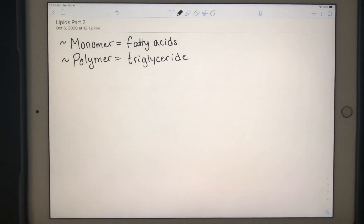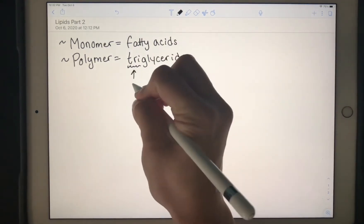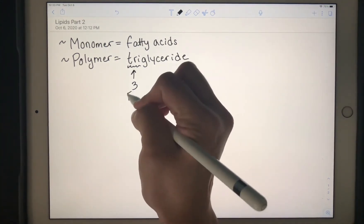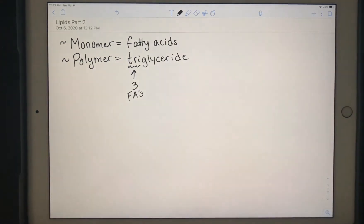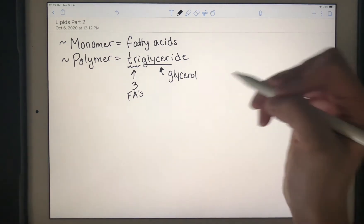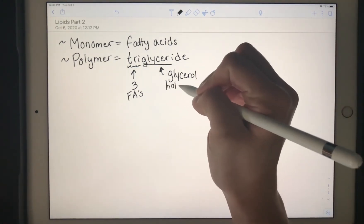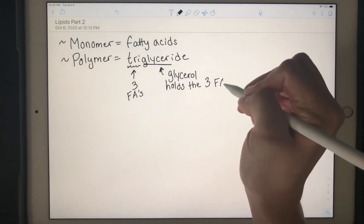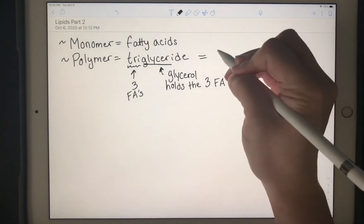triglyceride. And this seems like a fancy science term, but really that prefix tri means three, and what you're going to find out is that a triglyceride has three fatty acids. Glycerol—that molecule is how you get the glycer part of triglyceride, and that glycerol is going to hold those three fatty acids.